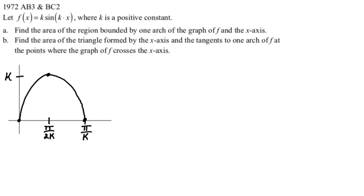I've copied over our picture. And we are trying to find the area of the triangle formed by the x-axis and the tangents to one arch of f at the points where the graph of f crosses the x-axis. So we're going to need the tangent lines, which means we're going to need the slope. So also, we're going to see my picture is terrible. I mean, those clearly would intersect and give you an isosceles triangle by symmetry. My picture is not good enough.